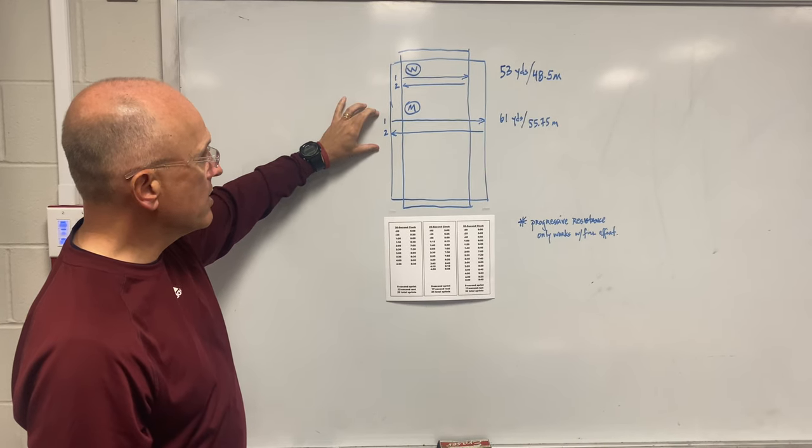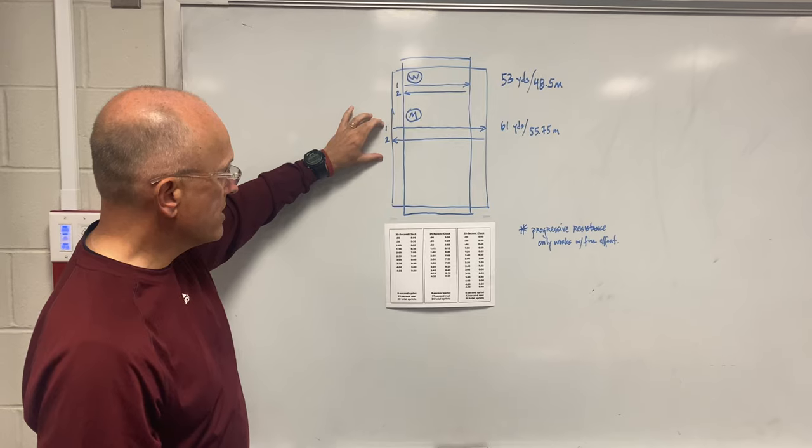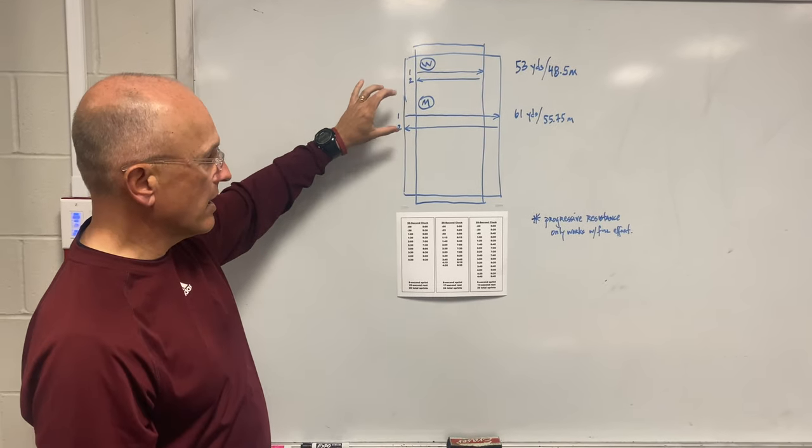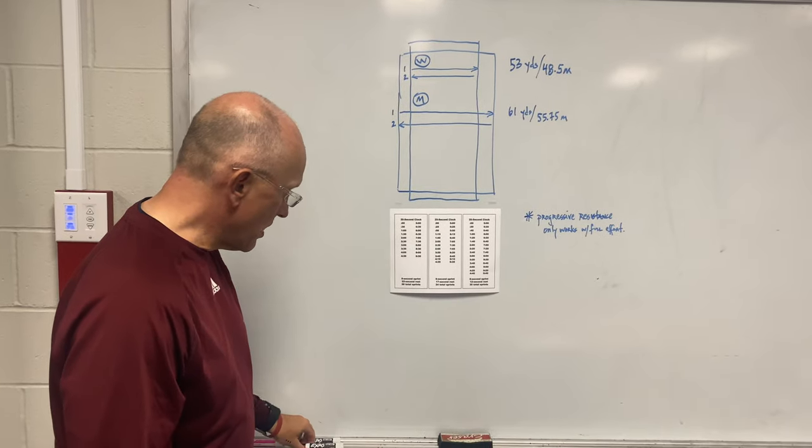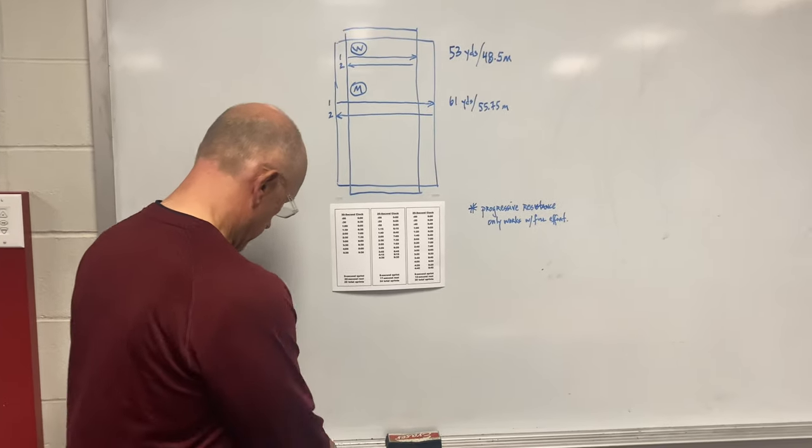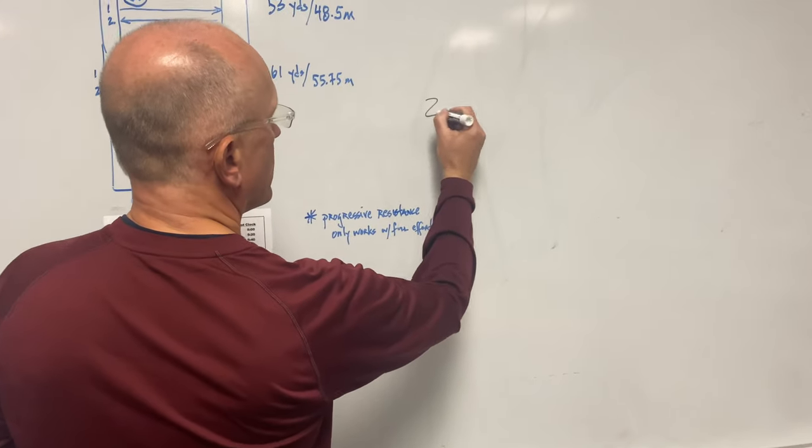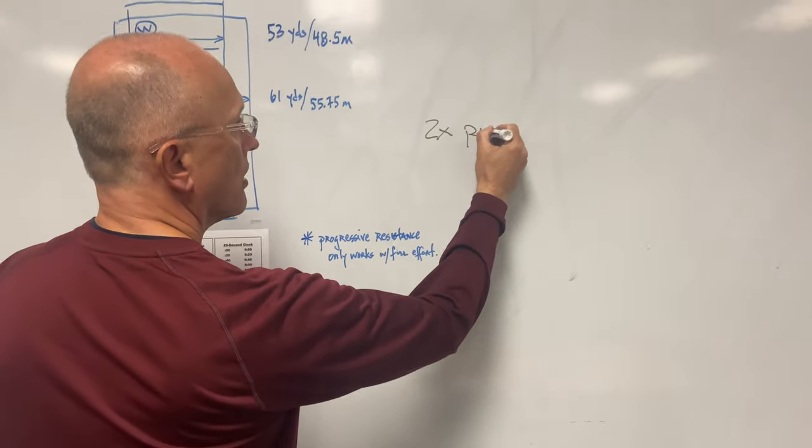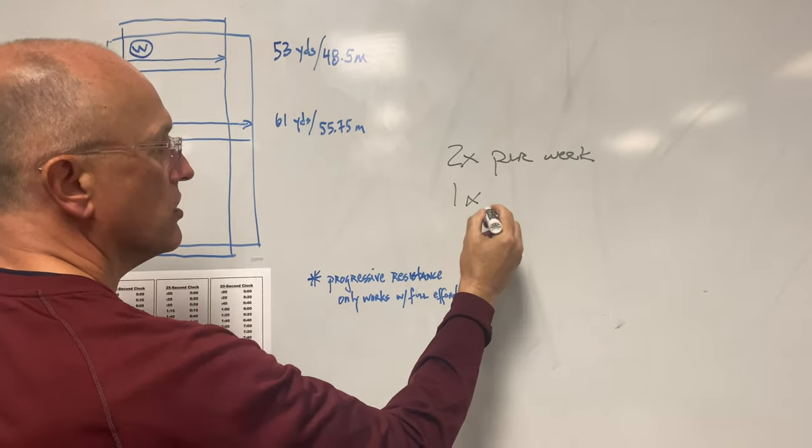Men are running 61 yards or 55.75 meters on a 30 second clock, then a 25 second clock, then a 20 second clock. And what you're going to want to do here is you're going to want to run this two times per week.